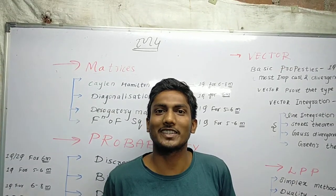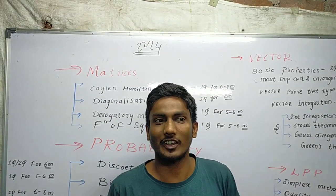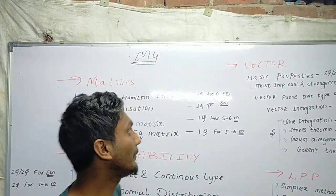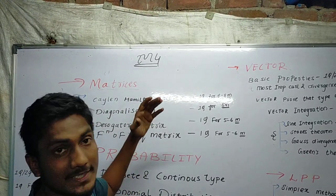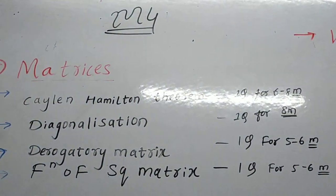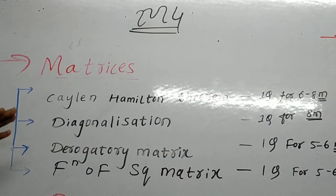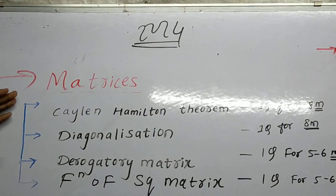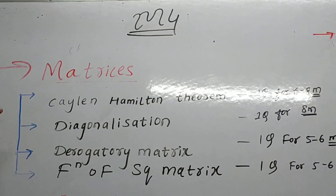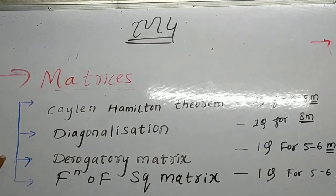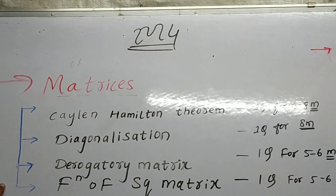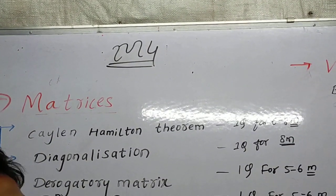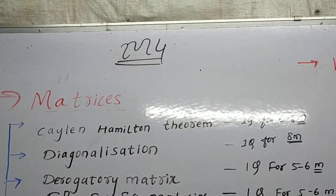Hi guys, today I am going to discuss the most important questions which may be asked in your Mumbai University exam. Let's have a look at M4. In this chapter, so many topics are there, like matrices. In matrices there is Cayley-Hamilton theorem, diagonalization, derogatory matrix, and function of square matrix. I have also written the expectation for how many marks each may carry.